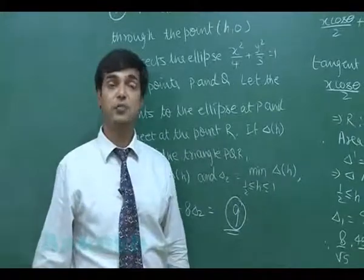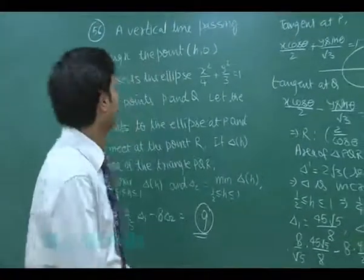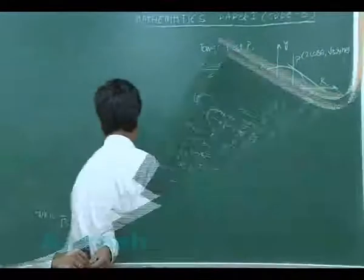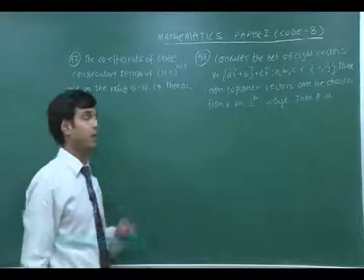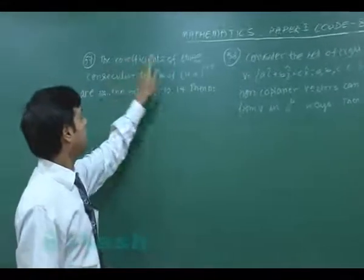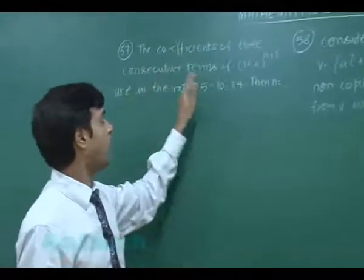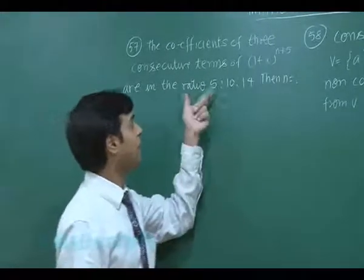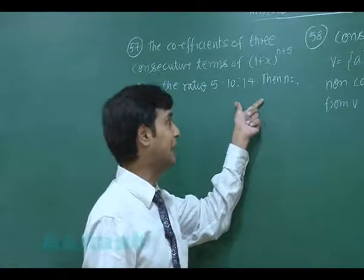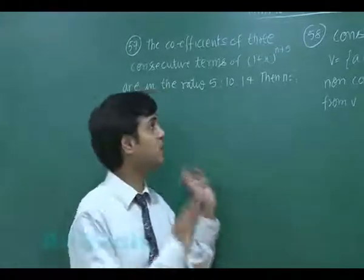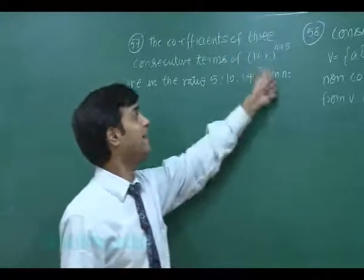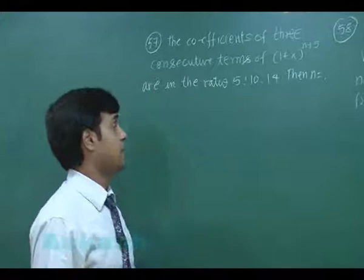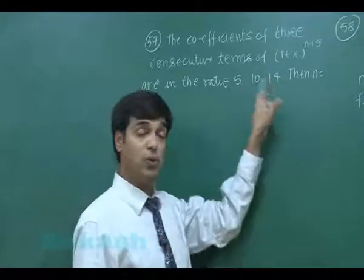Let's take the next one, that is question number 57. The coefficients of three consecutive terms of (1+x)^(n+5) are in the ratio 5:10:14, then n is.